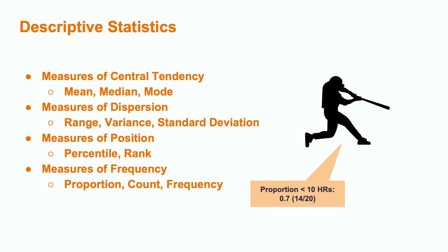Finally, measures of frequency, like proportion, count, and frequency, can describe how often a certain data point or range of data points appears in the dataset. For example, the proportion of Mets hitters who hit fewer than 10 home runs is 0.7, as 14 out of 20 players hit fewer than 10 home runs. This is, of course, just a start to the various ways that we can analyze statistical data.